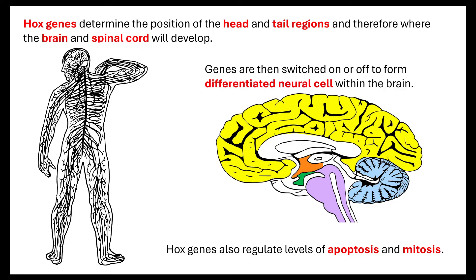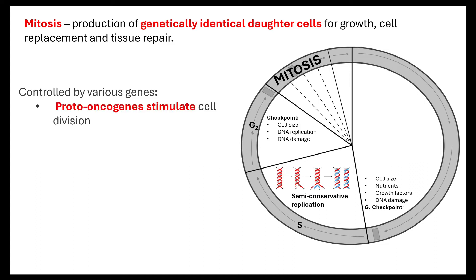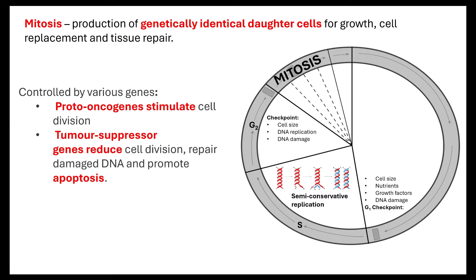Not only do hox genes do that, they also regulate levels of what's known as apoptosis and mitosis. Mitosis is the production of genetically identical daughter cells for growth, cell replacement and tissue repair. Mitosis is controlled by genes — controlled by the proto-oncogenes, stimulating cell division, or by tumour suppressor genes, which reduce cell division, repair damaged DNA and promote apoptosis.